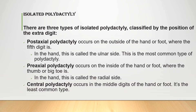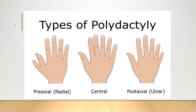Preaxial polydactyly occurs on the inside of the hand or foot where the thumb or big toe is; on the hand this is called the radial side. Central polydactyly occurs in the middle digits of the hand or foot and is the least common type. As you can see on the image, the preaxial or radial type is on the thumb side, the central type is found at the center, and the postaxial or ulnar type is found at the fifth digit.